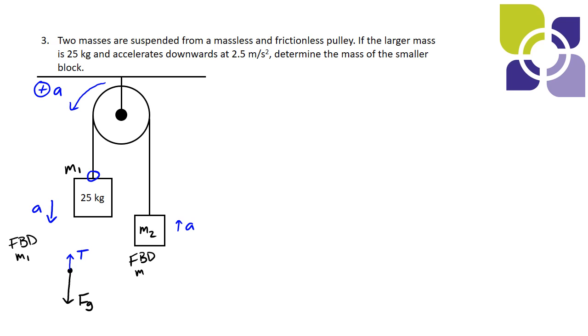We can also do a free body diagram for mass 2. It's a little smaller so we know that the force of gravity must be less but the tension has to be the same as the tension acting on mass 1 because these two tensions are coming from the same rope so those tensions have to be equal.